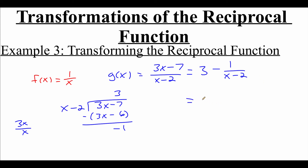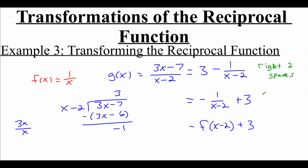I'm going to rearrange this to negative 1 over x minus 2 plus 3. Now what we've got is that x minus 2 on the bottom of the fraction, so I think about it as f of x minus 2. But we've got a negative in front of our fraction, so that's going to be the opposite of the function f. And then we still have that plus 3 on the back end. The minus 2, since we're subtracting 2 directly from the x, is a horizontal shift — so we move to the right two spaces. The negative in front of the function is going to flip the graph over the x-axis, so it's an x-axis reflection. And the plus 3 on the back end is a vertical shift up three spaces. So to avoid 0 on the bottom of the fraction, we need to make sure that our x value is not 2.